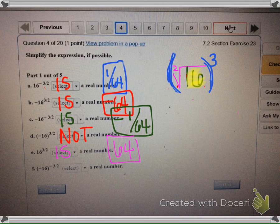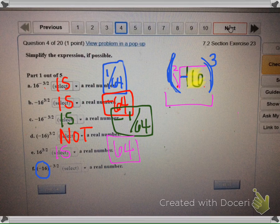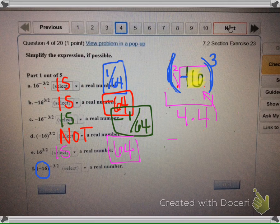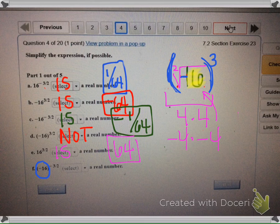Here in the parentheses, a negative 16, so that means in the radical, a negative 16. It's still three-halves. The negative means it would move to the denominator, but again we cannot do the square root of negative 16. 4 times 4 is not negative 16, negative 4 times negative 4 is not negative 16, so this is not a real number.